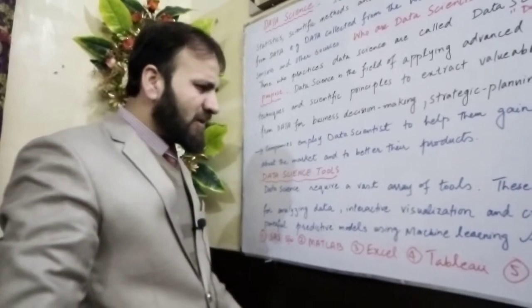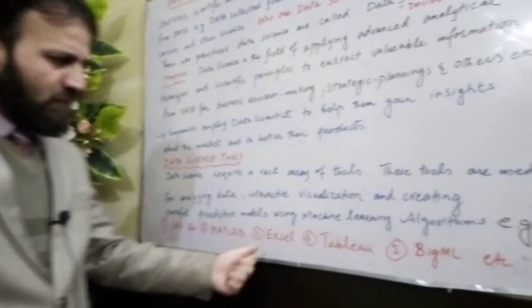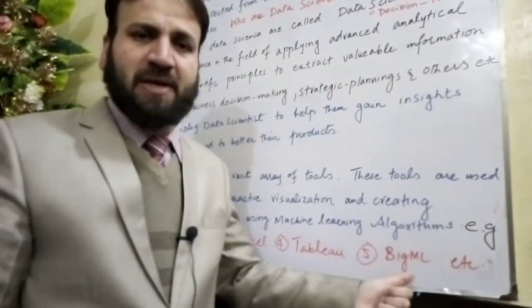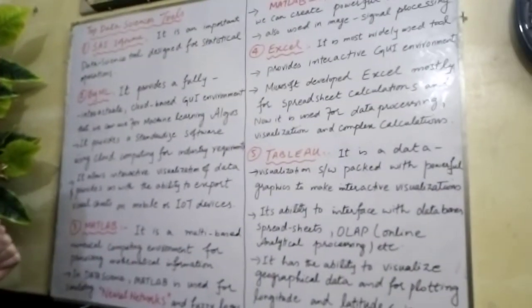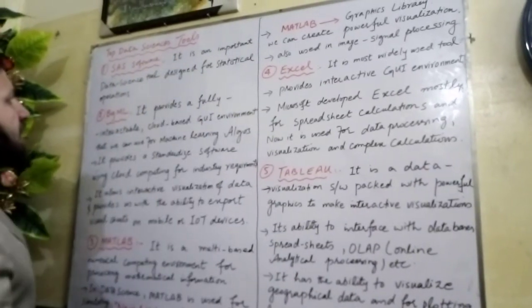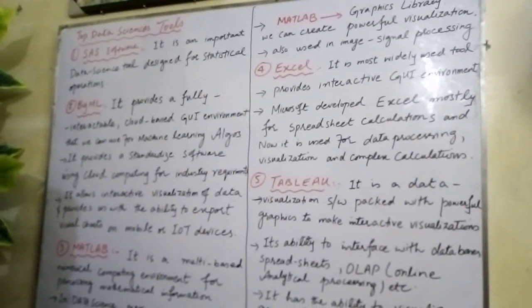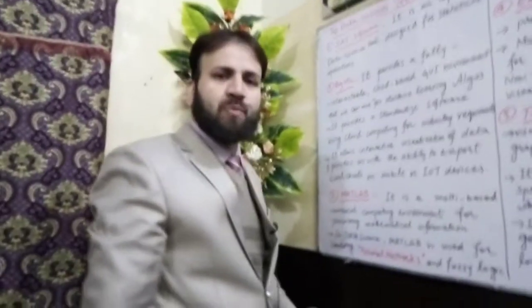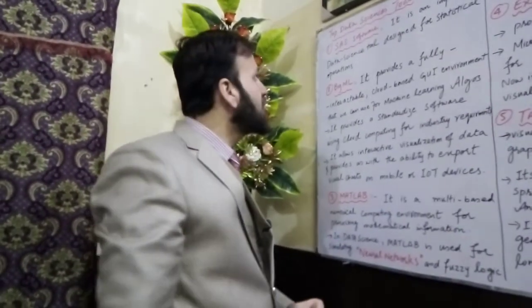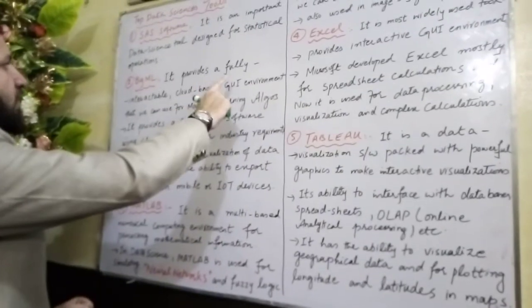We will now discuss some of the data science tools. First is SAS software, second is MATLAB, third is Excel, fourth is Tableau, and fifth is BigML. SAS software is an important data science tool designed for statistical operations. Data scientists use it to generate multiple graphs and charts for statistical operations, and many companies use this software for the analysis of their valuable data.